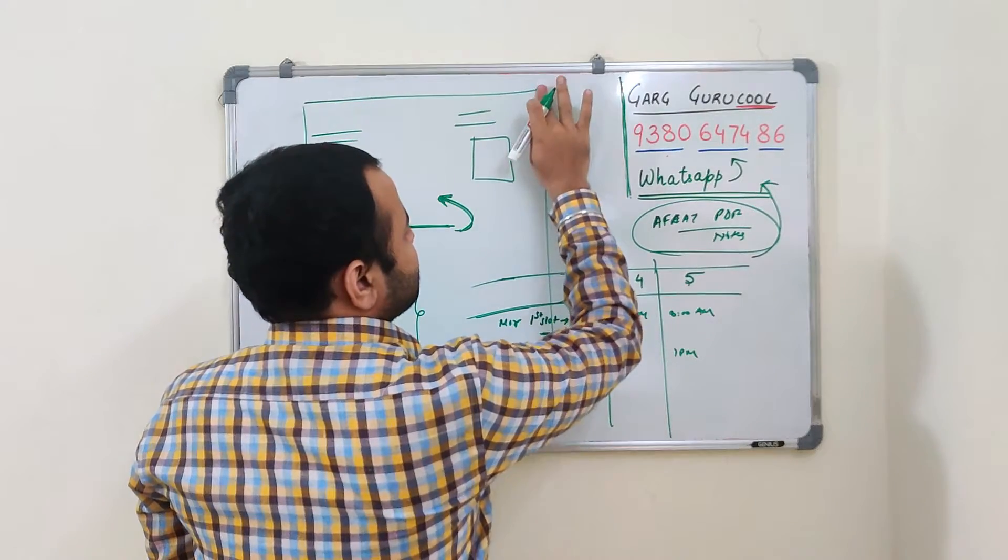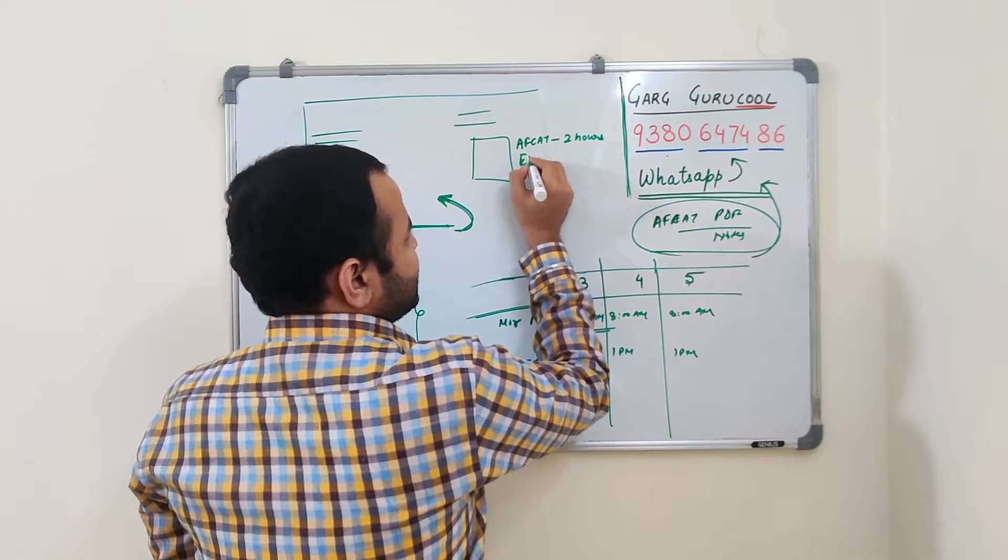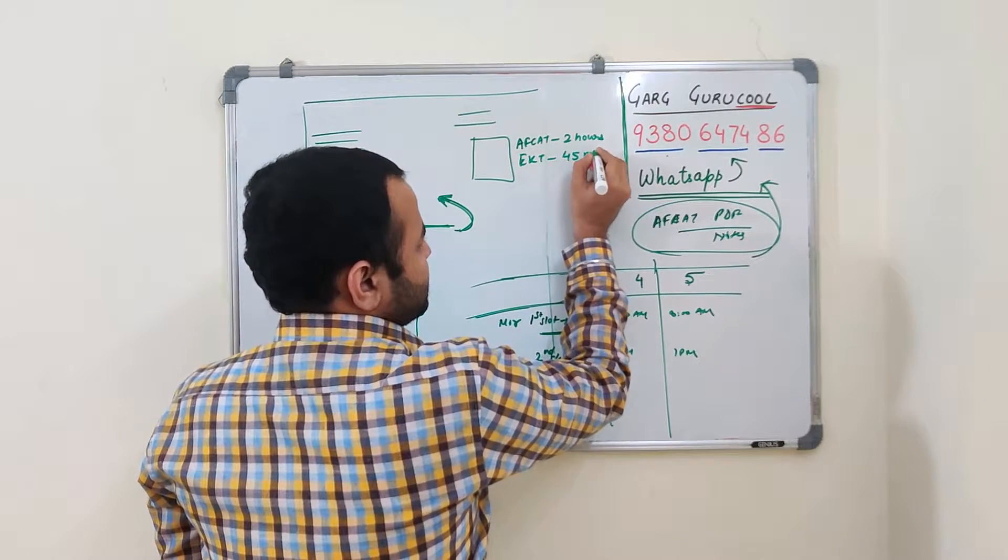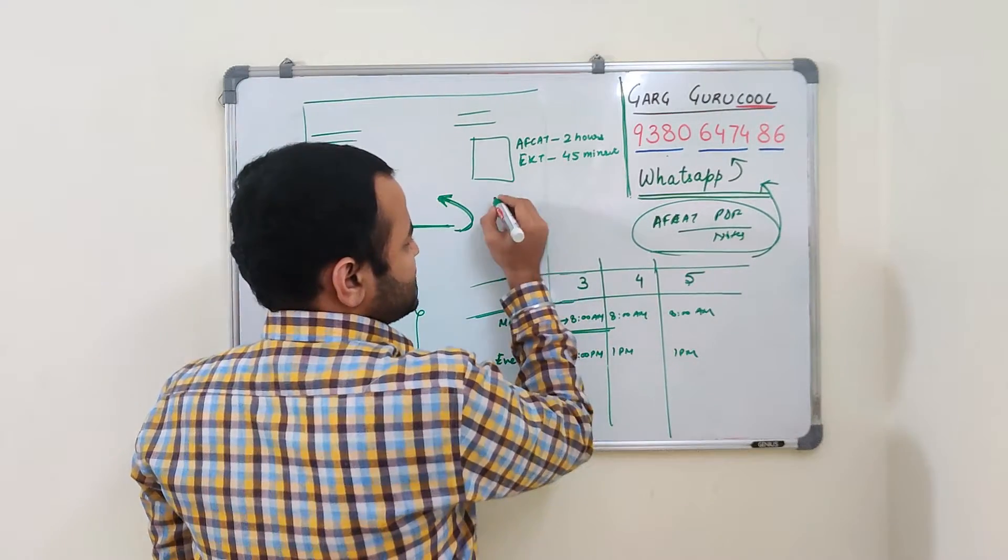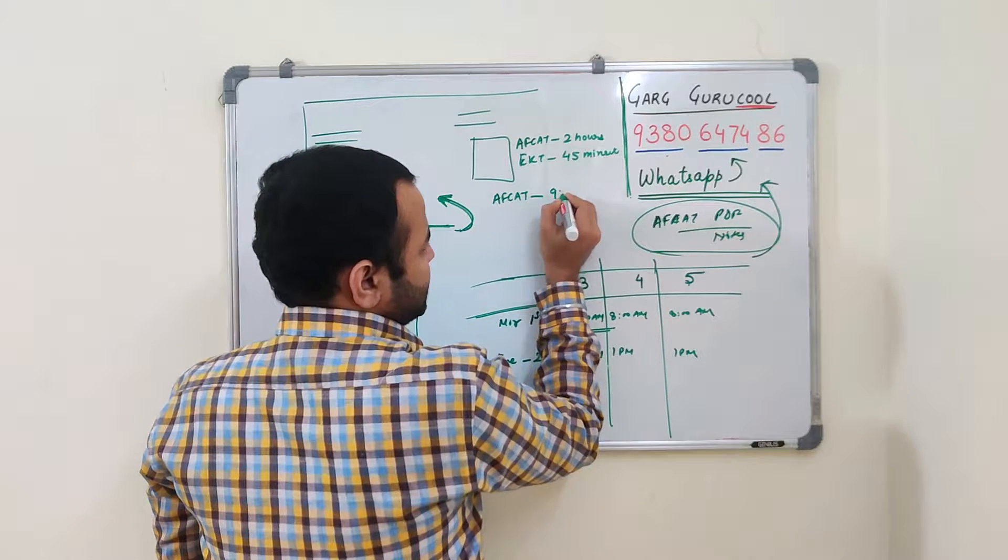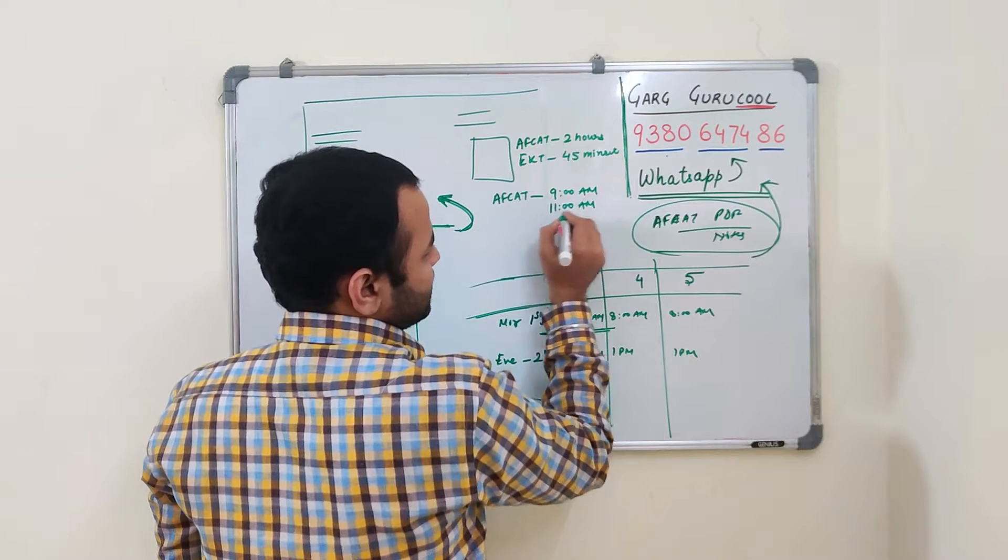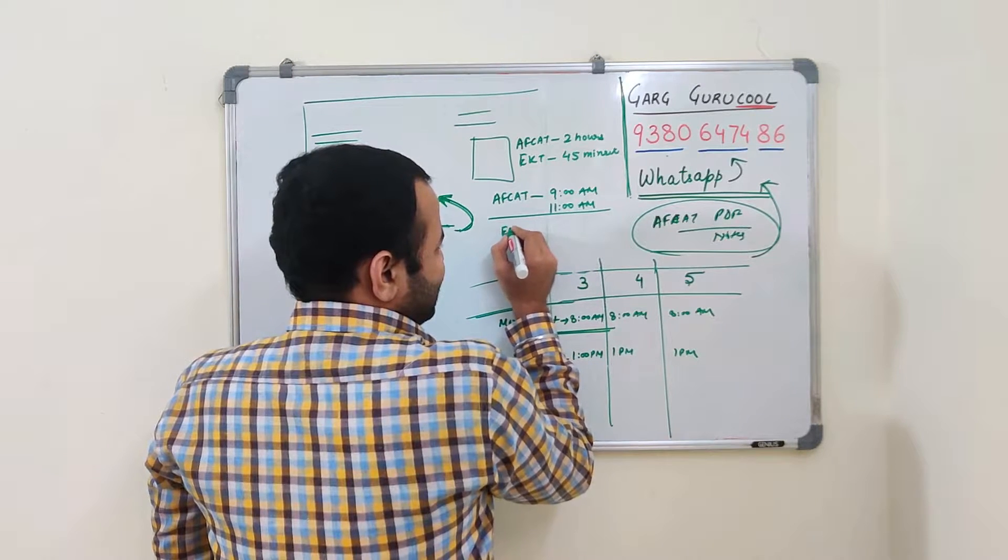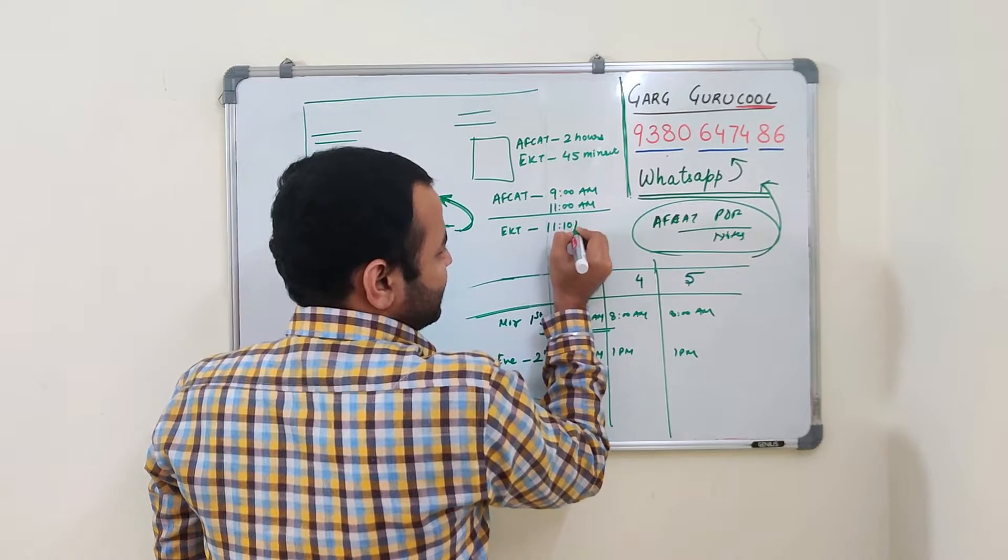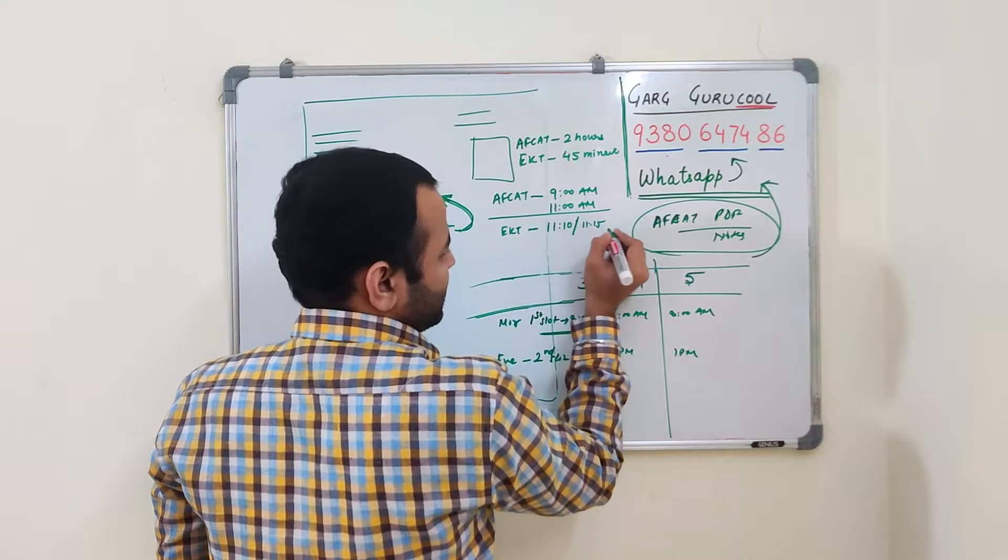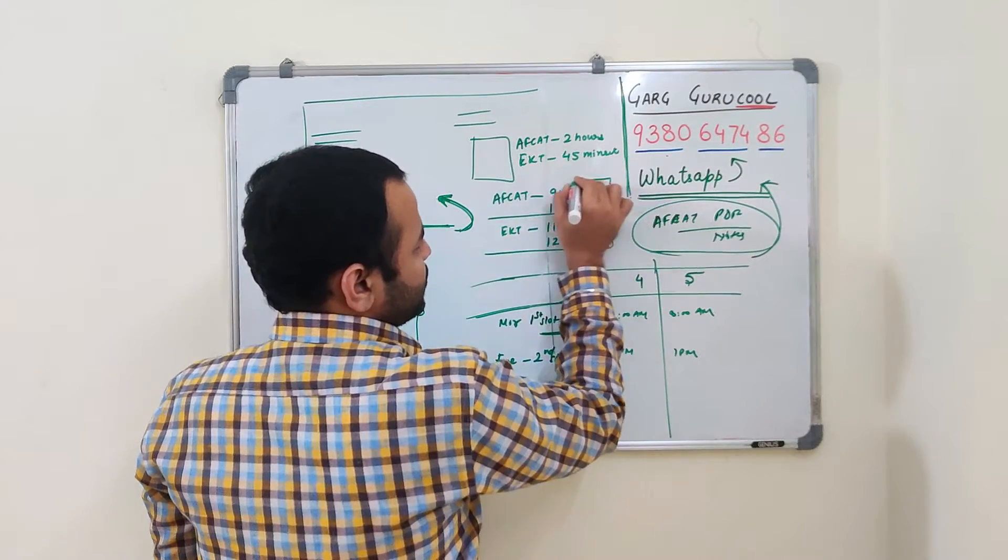So AFCAT is for, what is the duration of AFCAT? 2 hours. For EKT, duration is 45 minutes. So what will happen is, for morning shift, your AFCAT will start at 9 a.m. Now, it is for 2 hours. So it will go till 11 a.m. And EKT will start at 11.10 or 11.15. Like that.